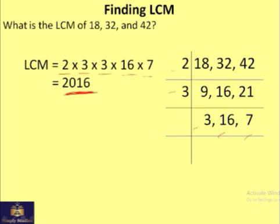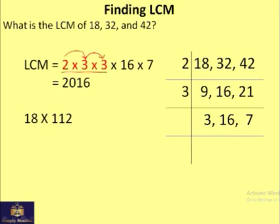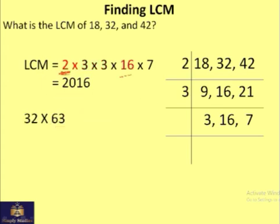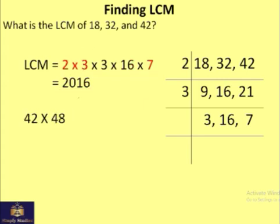To verify: 2 × 3 × 3 = 18, and 18 × 16 × 7 = 18 × 112 = 2016. Checking 32: 16 × 2 = 32, and the remaining factors are 3 × 3 × 7 = 63, so 32 × 63 = 2016. Checking 42: 6 × 7 = 42, and remaining factors are 16 × 3 = 48, wait — 42 × 48 = 2016. All three confirm the LCM is 2016.